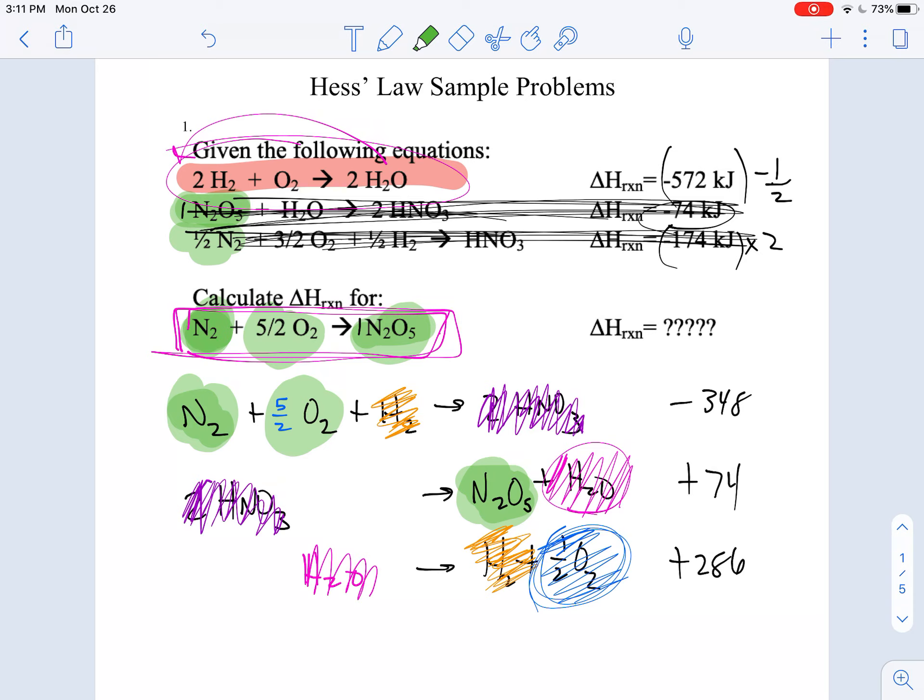So by adding up now all of these things here, all I have to do is put these into your calculator and you're done. So that's 348 negative. And I'm going to add 74 to it. And I'm going to get an overall final answer by adding this and this together of positive 12 kilojoules.